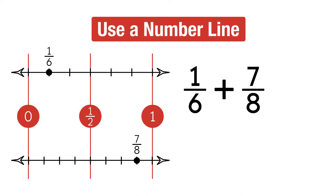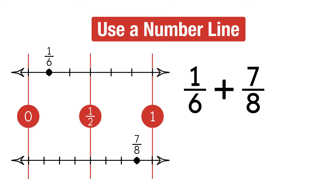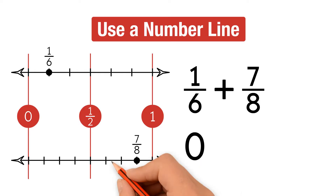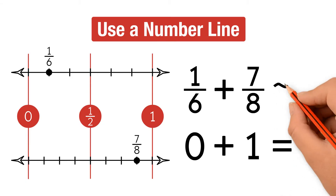Now let's estimate. As you can see, 1 sixth is between 0 and 1 half, but it's closer to 0, so we can round 1 sixth to 0. 7 eighths is between 1 half and 1, but it's closer to 1, so we can round up to 1. Now we add the two rounded numbers: 0 plus 1 equals 1. So 1 sixth plus 7 eighths is about 1.